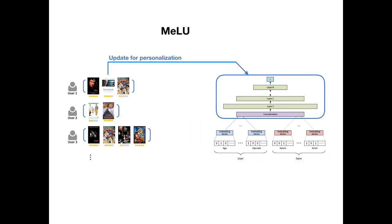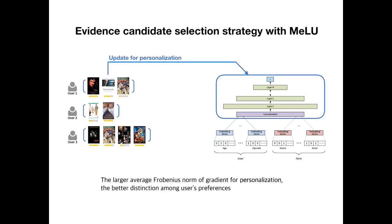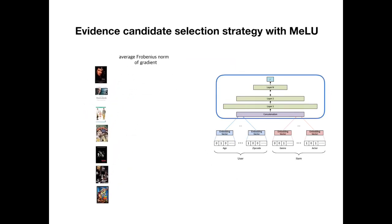Moreover, Malu allows us to select more reliable evidence candidates. We focus on the update for personalization: an item which has a large backpropagation error better determines a user's preference. Therefore, we consider that the larger the average Frobenius norm of the gradient, the better the distinction among user preferences. Based on this idea, we calculate a score to select evidence candidates. For each item, we calculate the average Frobenius norm of the gradient.